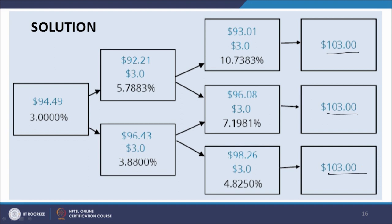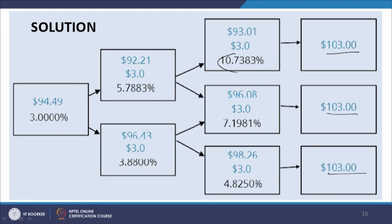Now let us work out the value of this cash flow at t=2 corresponding to each path the interest rates could take for the period from t=2 to t=3. If the rate of 10.7383% materializes, we discount 103 at that rate and arrive at a value at t=2 of 103 ÷ 1.107383. This is the value at t=2 if the interest rate from t=2 to t=3 takes the value 10.7383%.